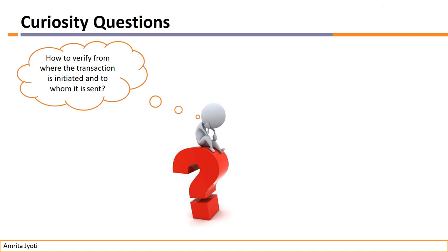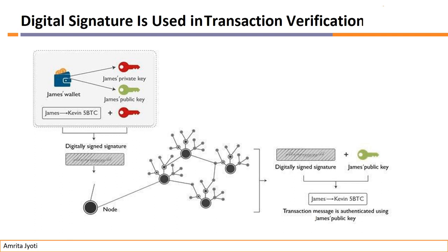How to verify from where the transaction was initiated and to whom it is sent — this diagram clearly shows. James wants to send 5 BTC coins to Kevin. James has two keys: a private key and a public key. James sends 5 BTC to Kevin. James will encrypt this transaction using his private key — that creates a digitally signed signature.